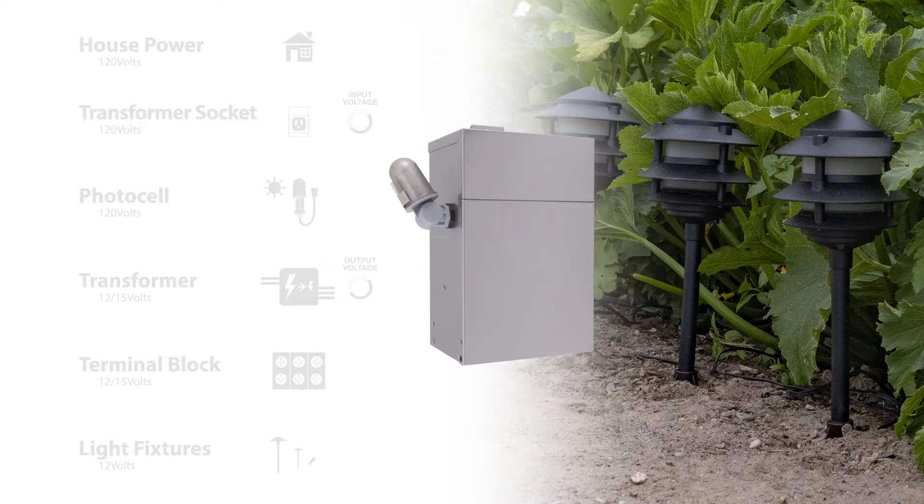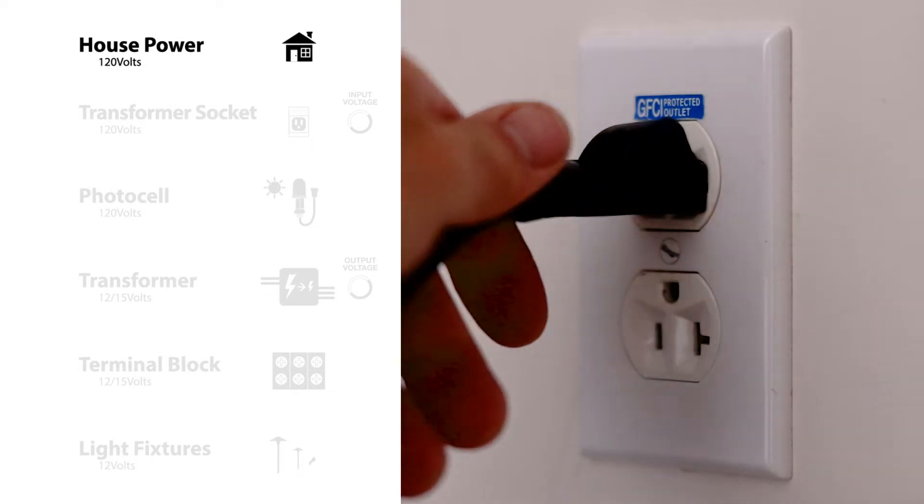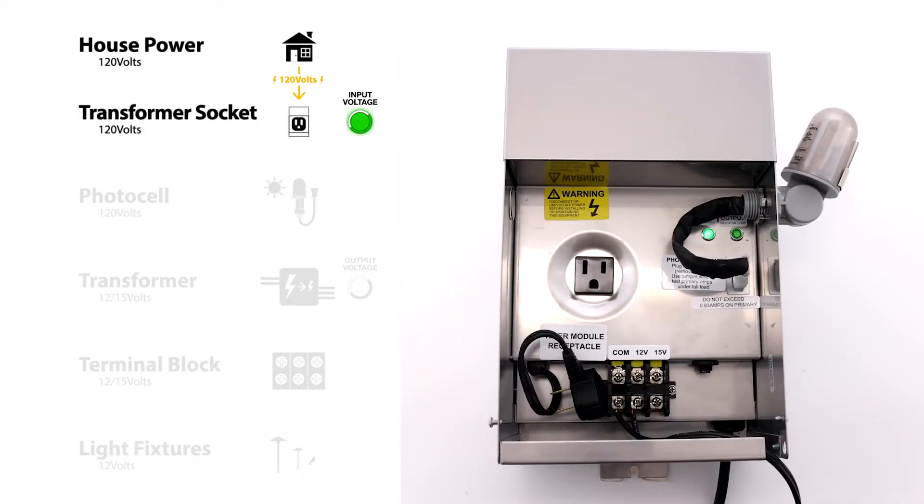Here's how the power flows to your landscape lights. The power starts at your house. Hopefully there's a GFI to plug into. If not, you may want to get one installed.